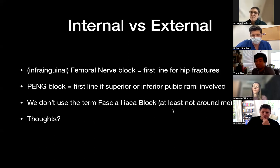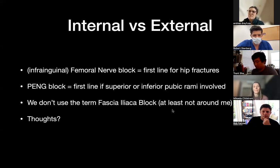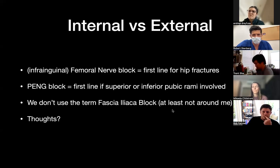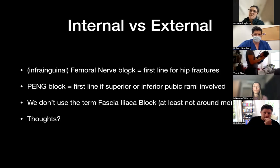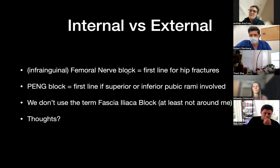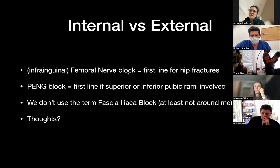It seems like everybody's on the same page that we should probably just stick with the infrainguinal fascia iliaca block and really sell that — what I call at Highland the femoral nerve block. For vernacular reasons and also for cross-platform pollination, it makes much more sense. Does everybody agree with that? Good. I think it's good to hear that, and in our papers when we're publishing this stuff, we should really stick with language that is similar and easy to use.